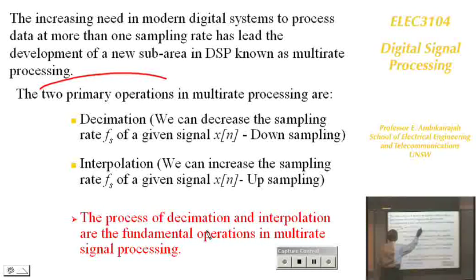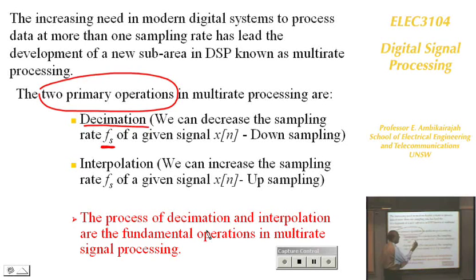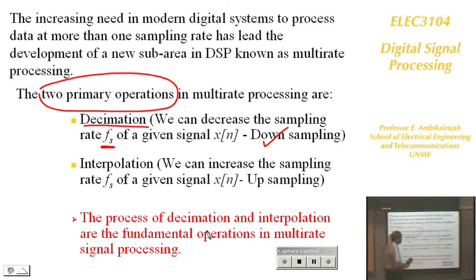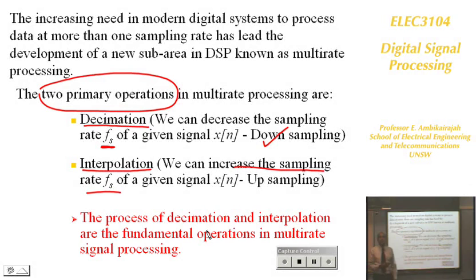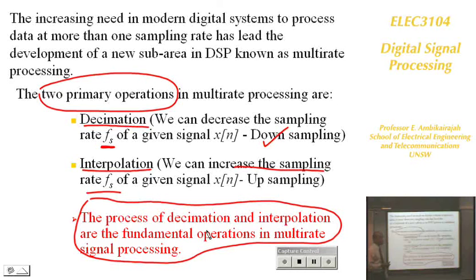There are two primary operations: decimation, where we decrease the sampling rate Fs to a particular frequency — for example, from 8 kHz input down to 2 kHz output, sometimes called downsampling — and interpolation, where we increase the sampling rate. These are important operations for a multirate system.